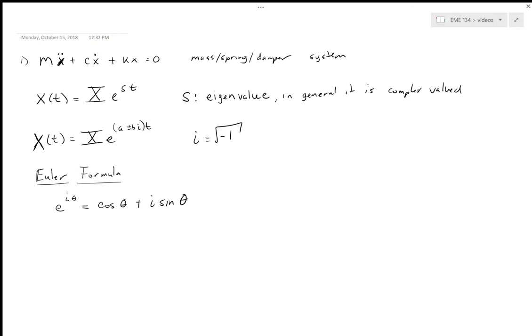This relates an exponential to sines and cosines. If you recall, the solutions to the spring-mass-damper system often have oscillations and have decay or growth, so these exponentials and the cosines and sines allude to the kind of solutions that we're going to see.